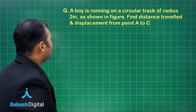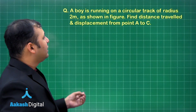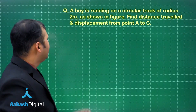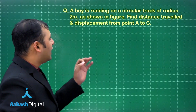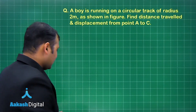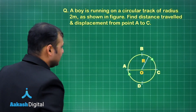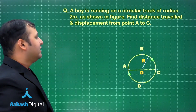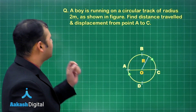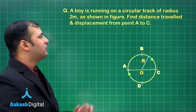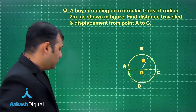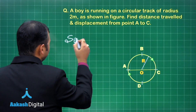In the next question, a boy is running on a circular track of radius 2 meters. We have to find the distance traveled and displacement from point A to C.